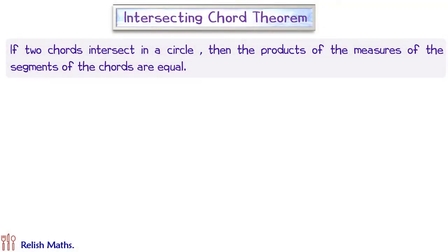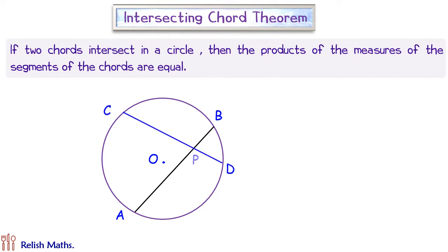Let us check what is the intersecting chord theorem. We have a circle with center O, and in this we have two chords: one is AB, another is chord CD. They are intersecting at a point P.